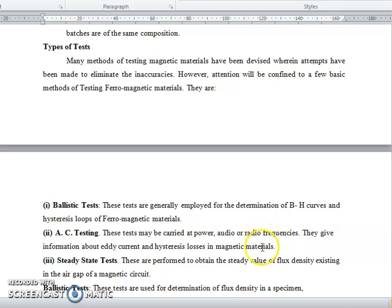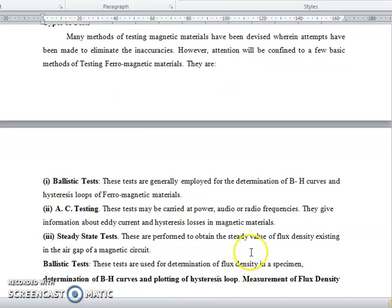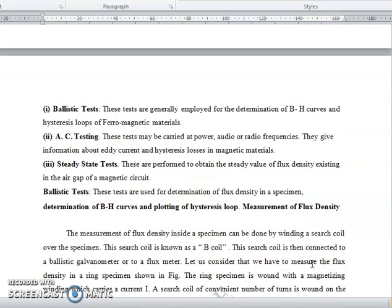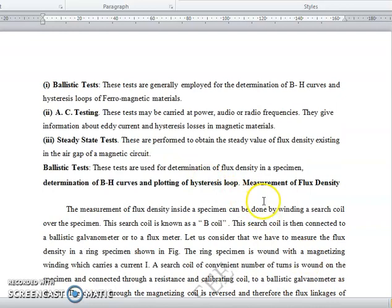Steady State Test - these are performed to obtain the steady value of flux density existing in the air gap of the magnetic circuit. Ballistic Tests - these tests are for determining the flux density in the specimen, determination of BH curve and plotting hysteresis loop.